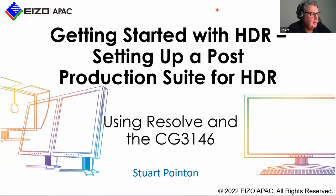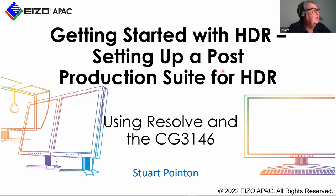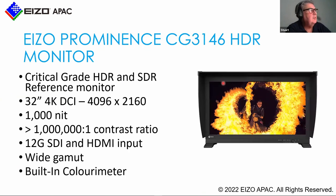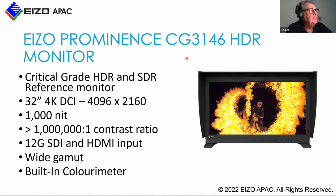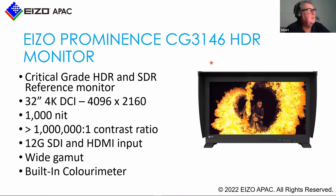What we want to do is go through some basics on HDR and how to set up your post suite. It's critically important if you're going to be in the HDR world that you have your system set up correctly before you even start grading, so you can see things like shadow details and highlights correctly for the environment you're in. I'll be referring to the EIZO Prominence CG3146 HDR monitor — I'll often just call it the CG3146 or the 3146, being Australian we tend to shorten things down.